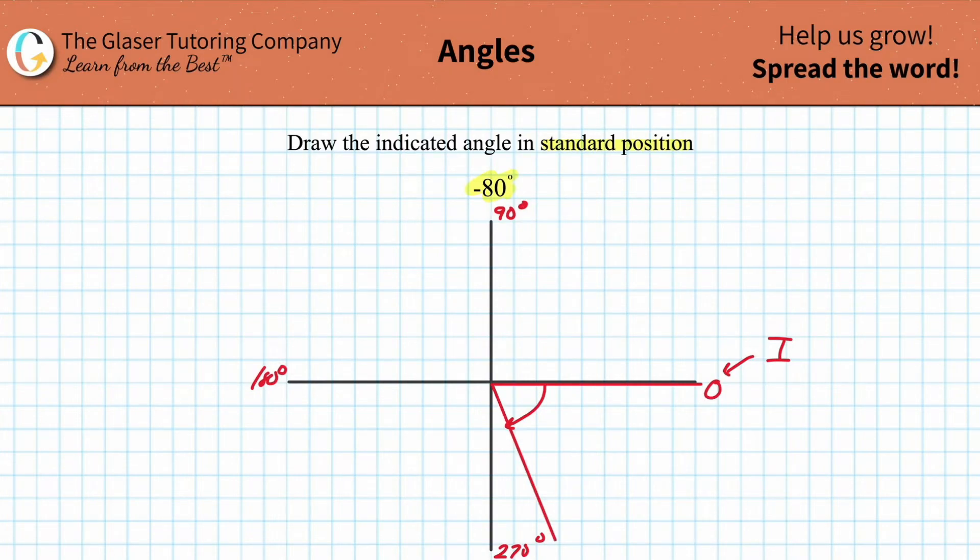So what I drew now represents the terminal side, and this is the vertex of the angle, basically this line in here. That represents a negative 80 degree angle.